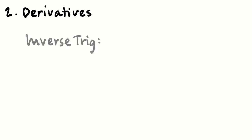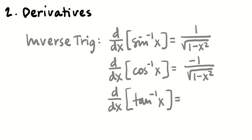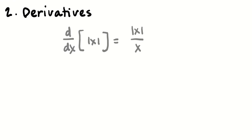We also need to know our arc-trig derivatives: the derivative of arcsin(x) is 1/√(1 − x²), the derivative of arccos(x) is −1/√(1 − x²), and the derivative of arctan(x) is 1/(1 + x²). It may also be helpful to know that the derivative of |x| is |x|/x, though that's not a formula we strictly must memorize.